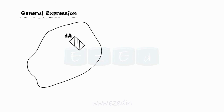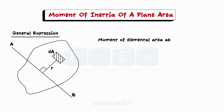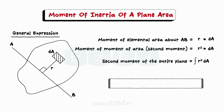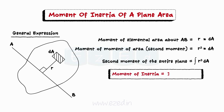To find the general expression for moment of inertia of an area, we will consider a plane area as shown. Let dA be the area of an element inside the plane area. Let the element be located at a perpendicular distance r from the axis AB. Moment of the elemental area about the axis AB equals r into dA. The second moment of area is equal to r² into dA. Hence, the second moment of the entire plane can be found using the following integral. This is commonly referred to as moment of inertia — the general expression for moment of inertia of plane areas.